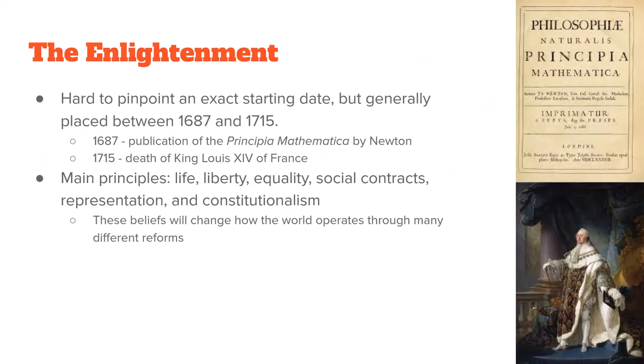So let's start with the Enlightenment. It's really hard to pinpoint a specific date on when the Enlightenment happens. Generally speaking, 1687 to 1715 is the beginning. In 1687, that's when Isaac Newton published his Principia Mathematica. 1715 is the death of the absolute monarch Louis XIV in France. Somewhere between those two dates is the general beginning of the Enlightenment.